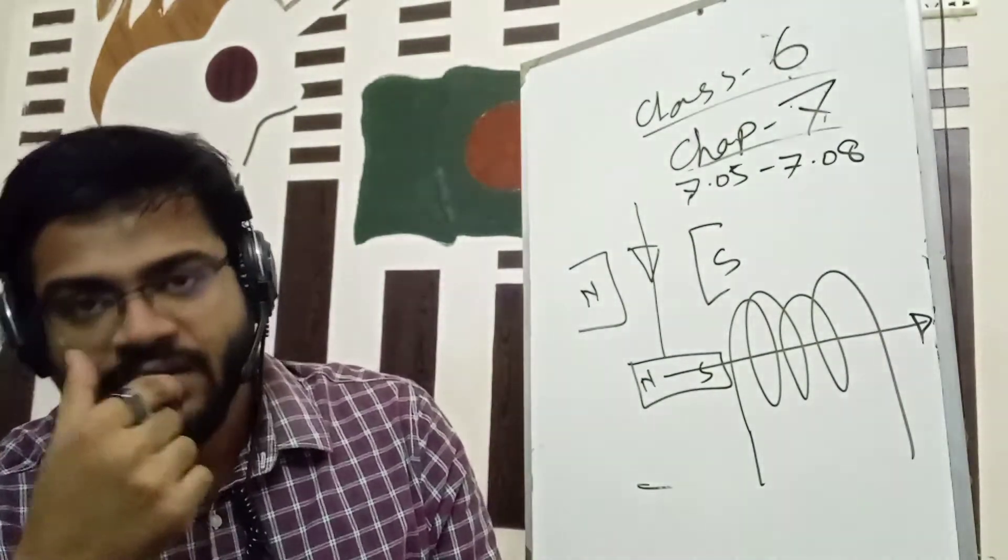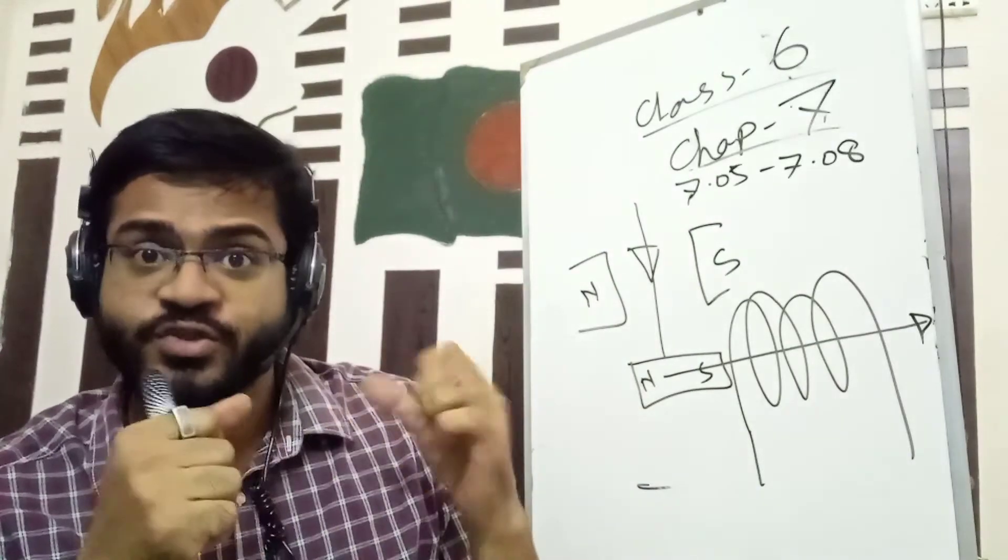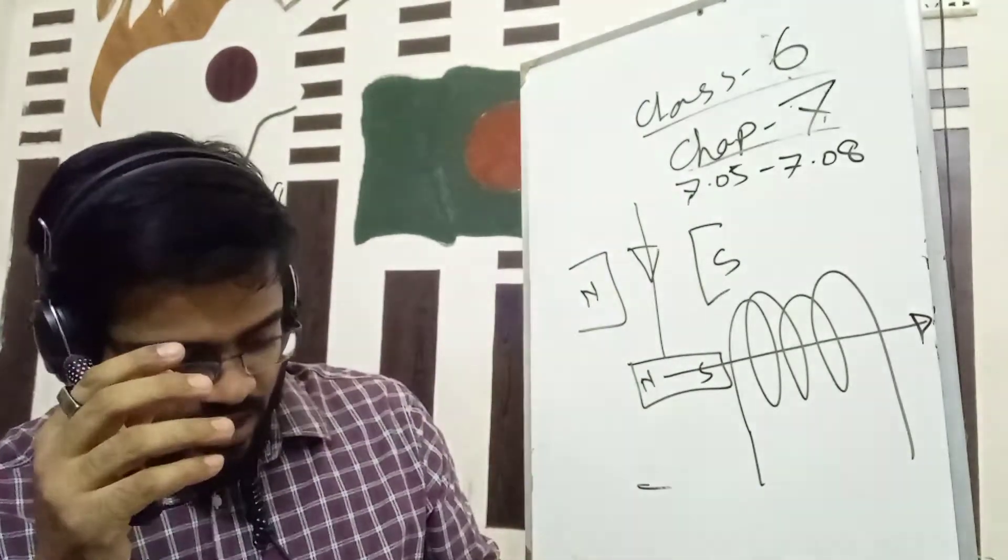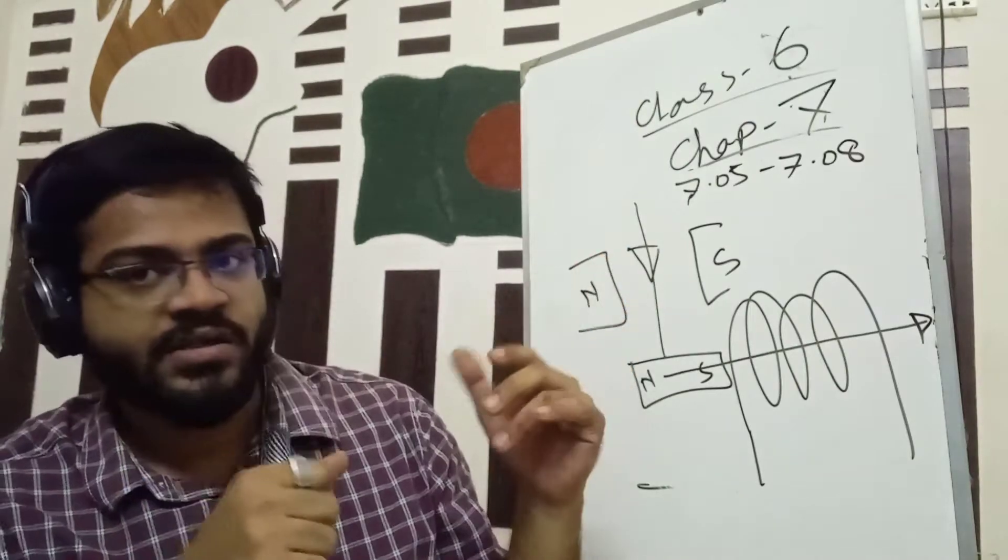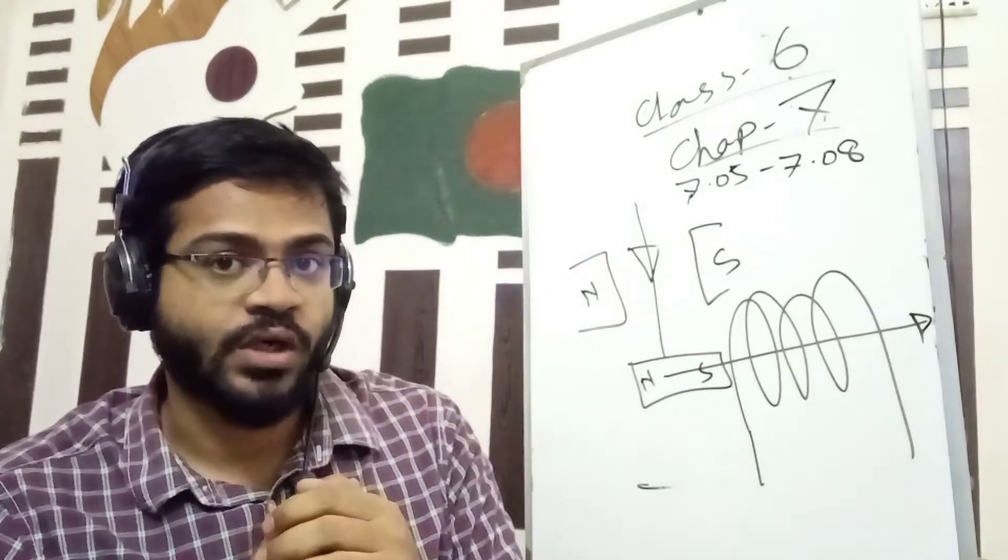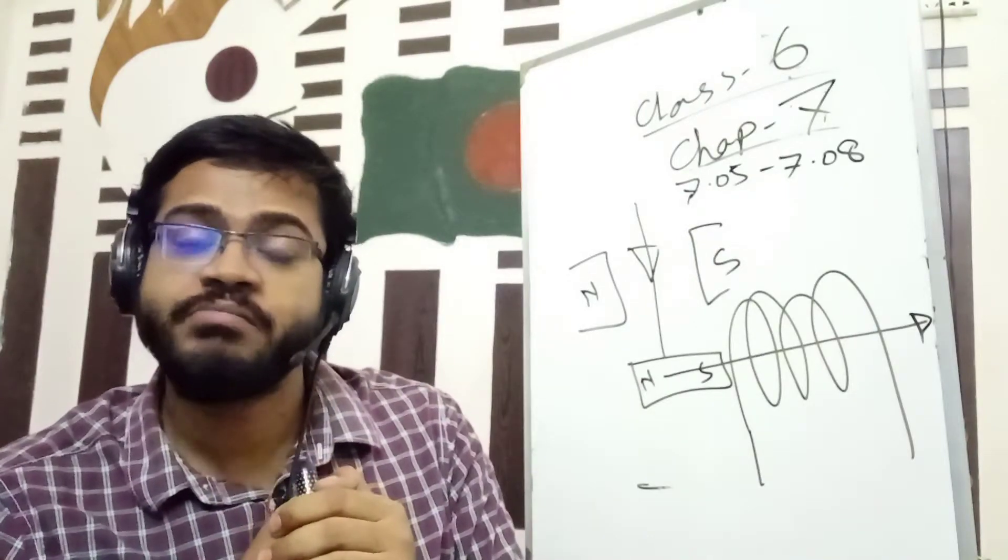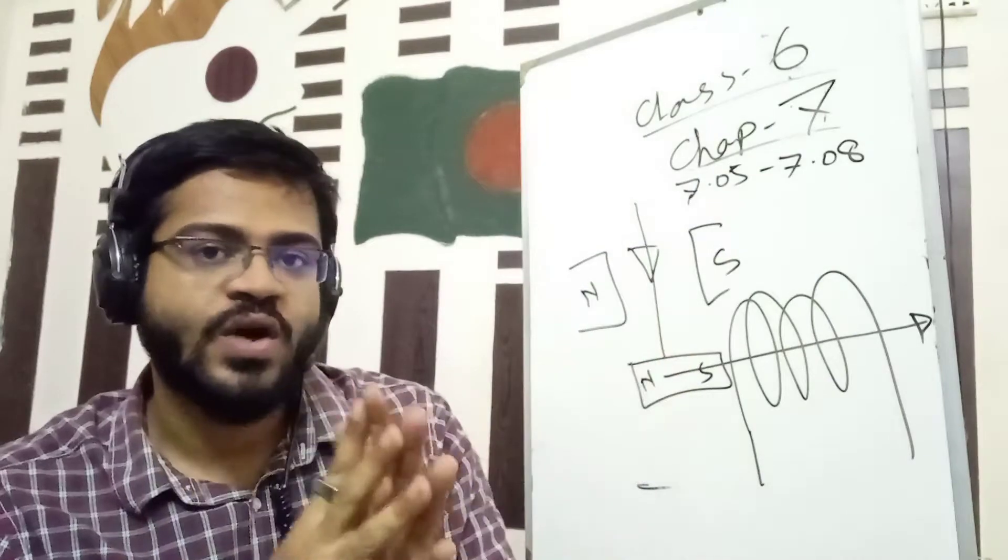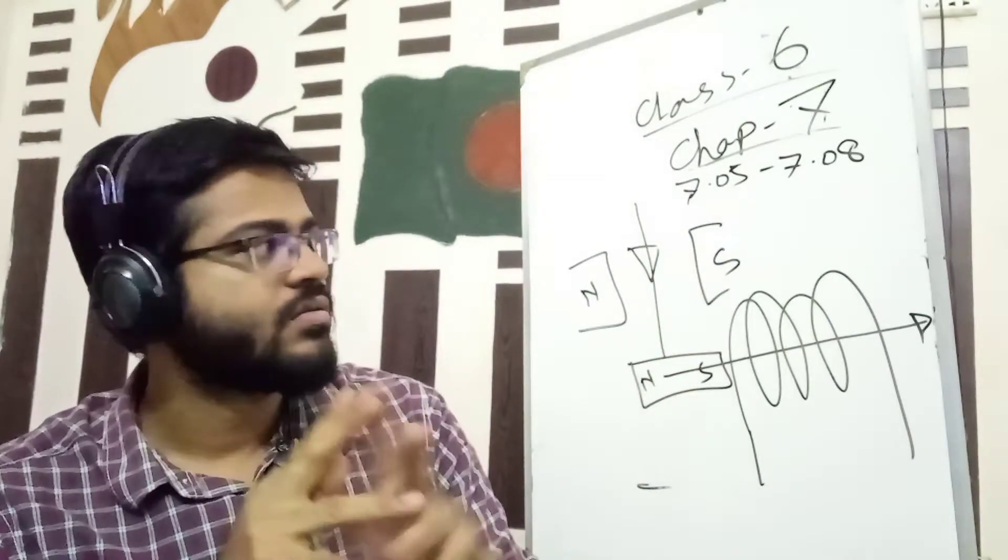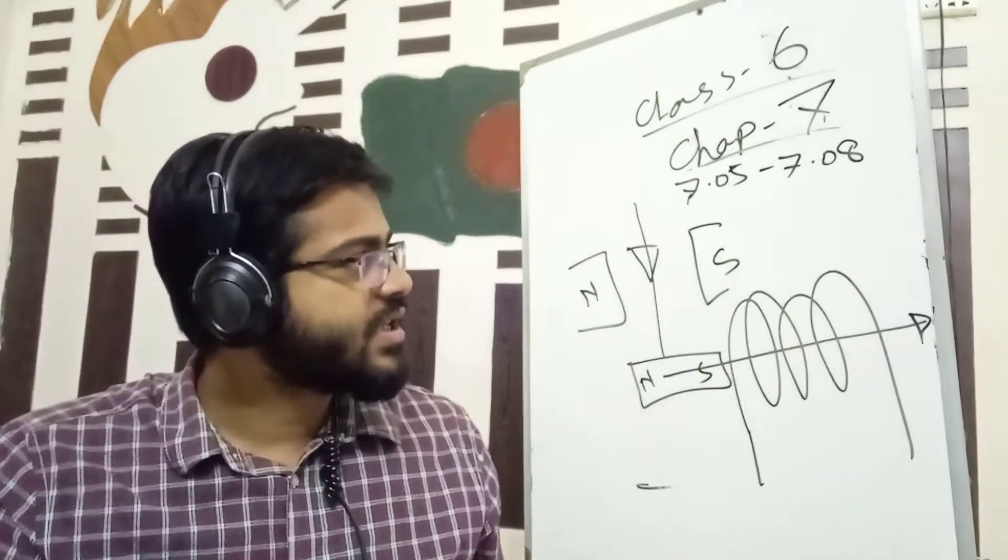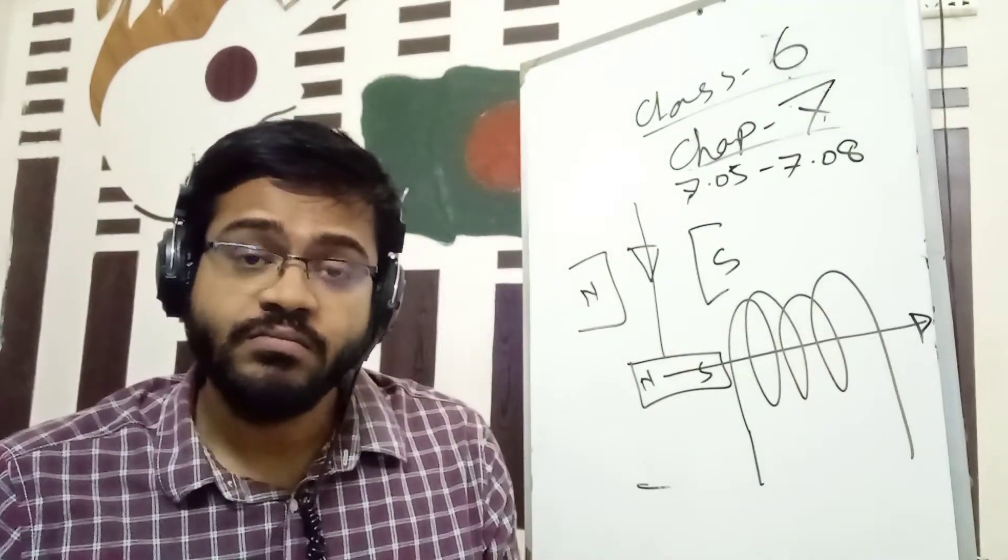Definitely, when the magnet is stronger, more electricity will be produced. If we move the wire or if we move the magnet, electricity will be produced. The wire length also matters. So, this is Unit 7.05.